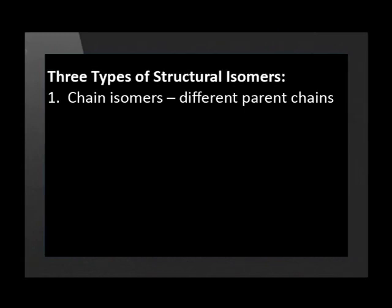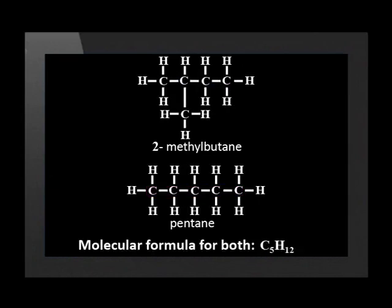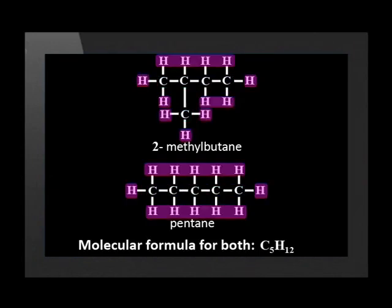There are three types of structural isomers. The first examples that we have seen so far are the chain isomers. They have different parent or backbone chains. For example, 2-methylbutane and pentane. Notice that in 2-methylbutane the longest chain has 4 carbon atoms, while in pentane there are 5 carbon atoms in the long chain. But there are 5 carbon atoms in each molecule and 12 hydrogen atoms in each one. This is why the molecular formula is C5H12.